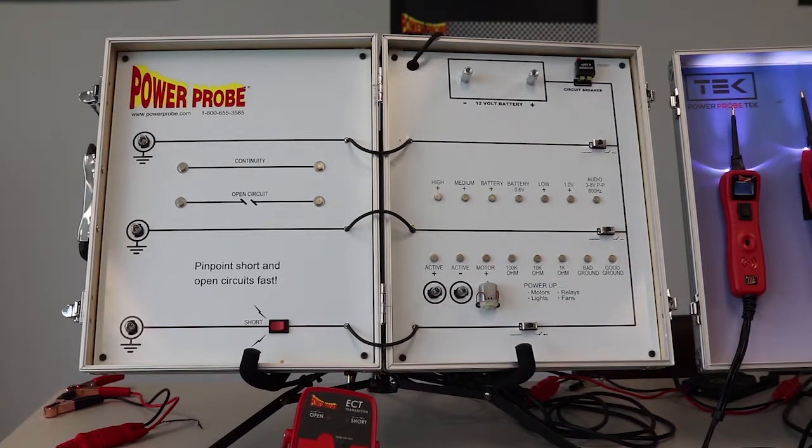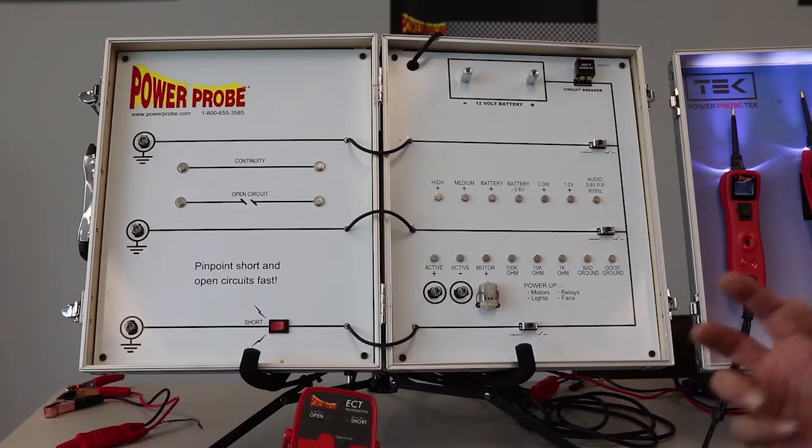Lighting circuits can be one of the worst nightmares on vehicles because every corner of the car or the interior are all covered by the same fuse. So where do you start? We want to locate where that short is on the vehicle without tearing everything apart.